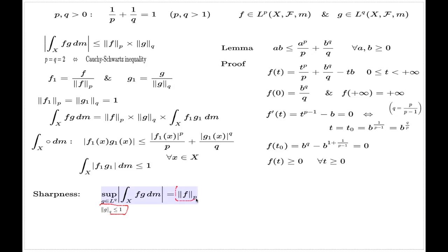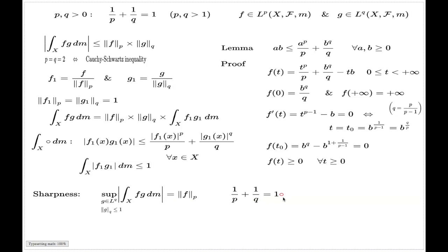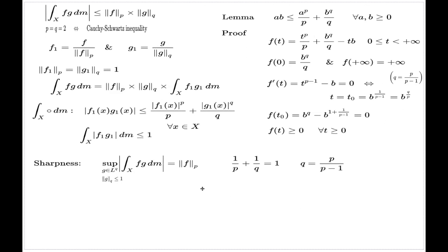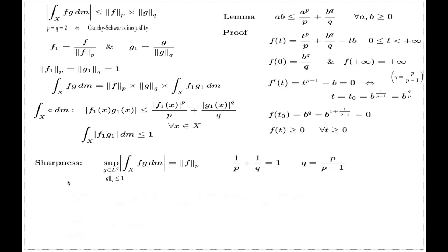The Hölder inequality delivers the inequality direction. We have to show the opposite one. We show the opposite by presenting a representative that achieves the supremum — and this will be a sharp presentation. So recall that p and q are connected by 1/p + 1/q = 1, or equivalently q = p/(p-1). Now we construct the representative in a two-stage process.